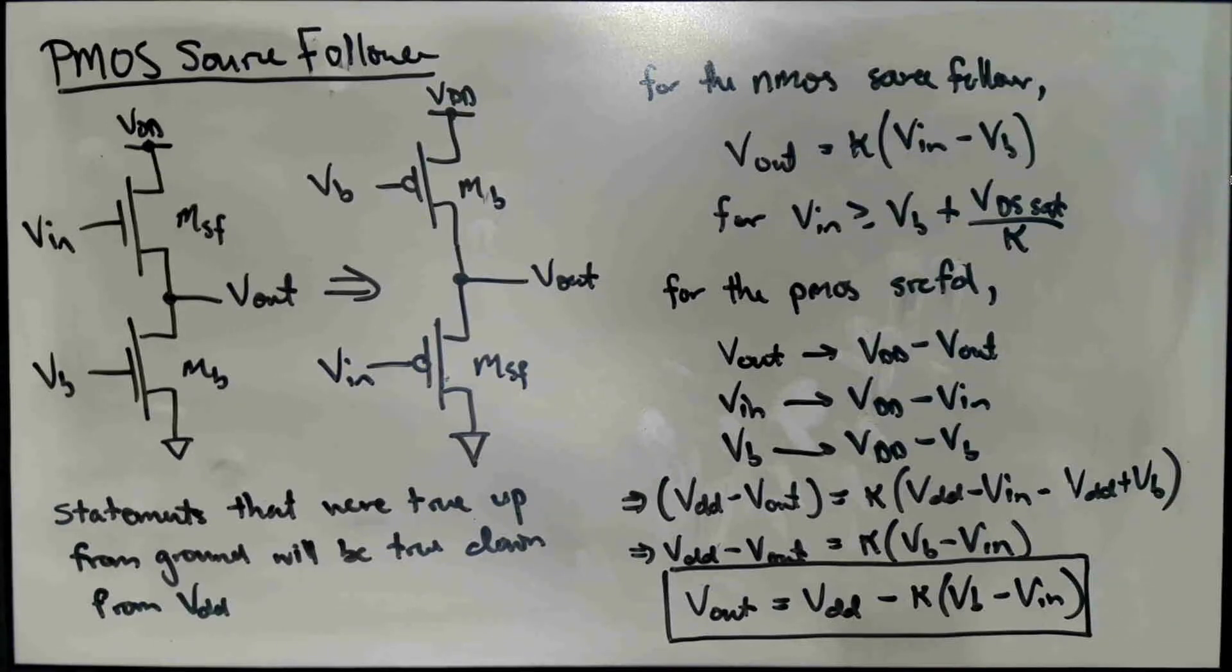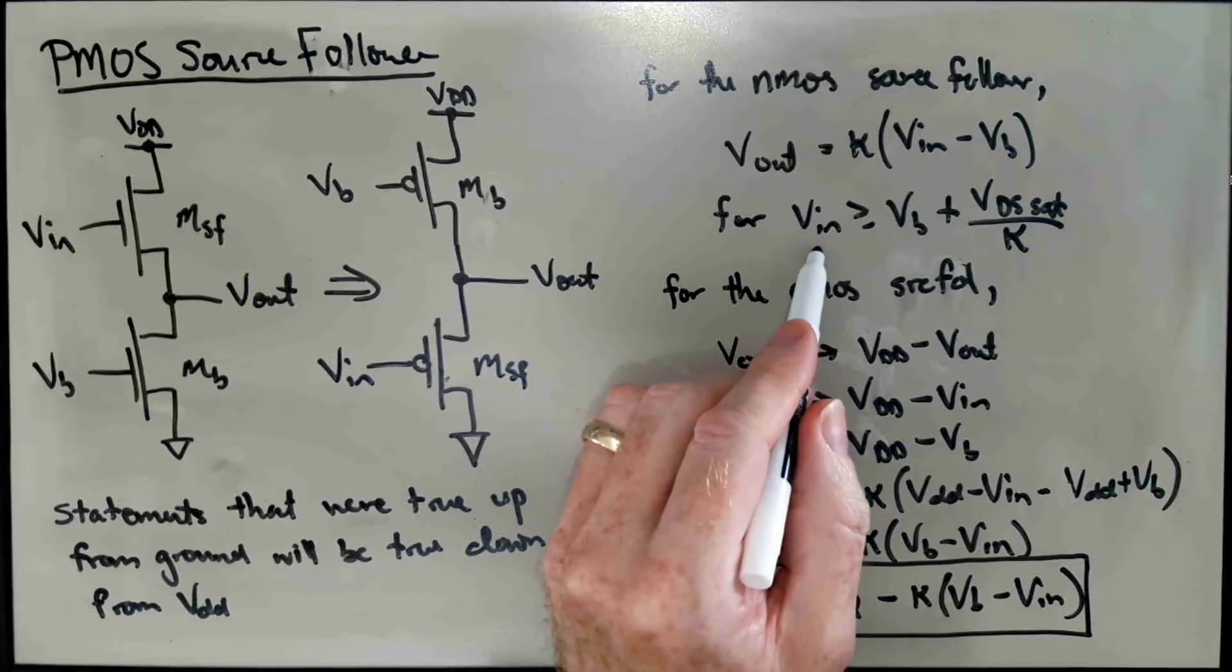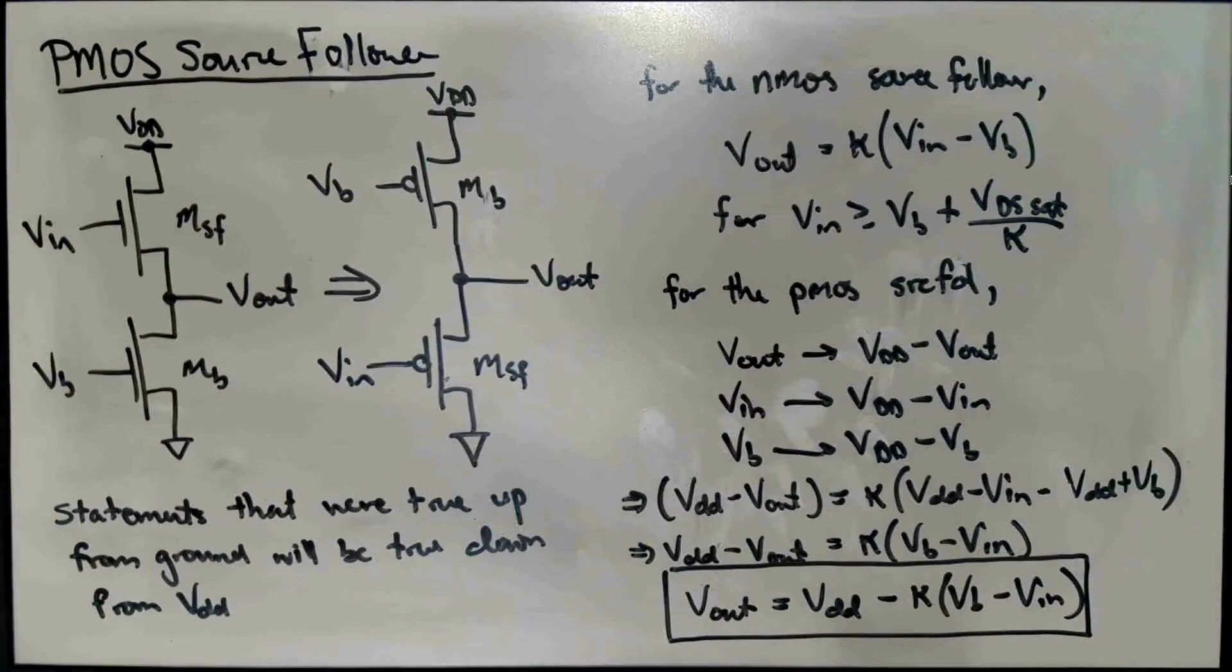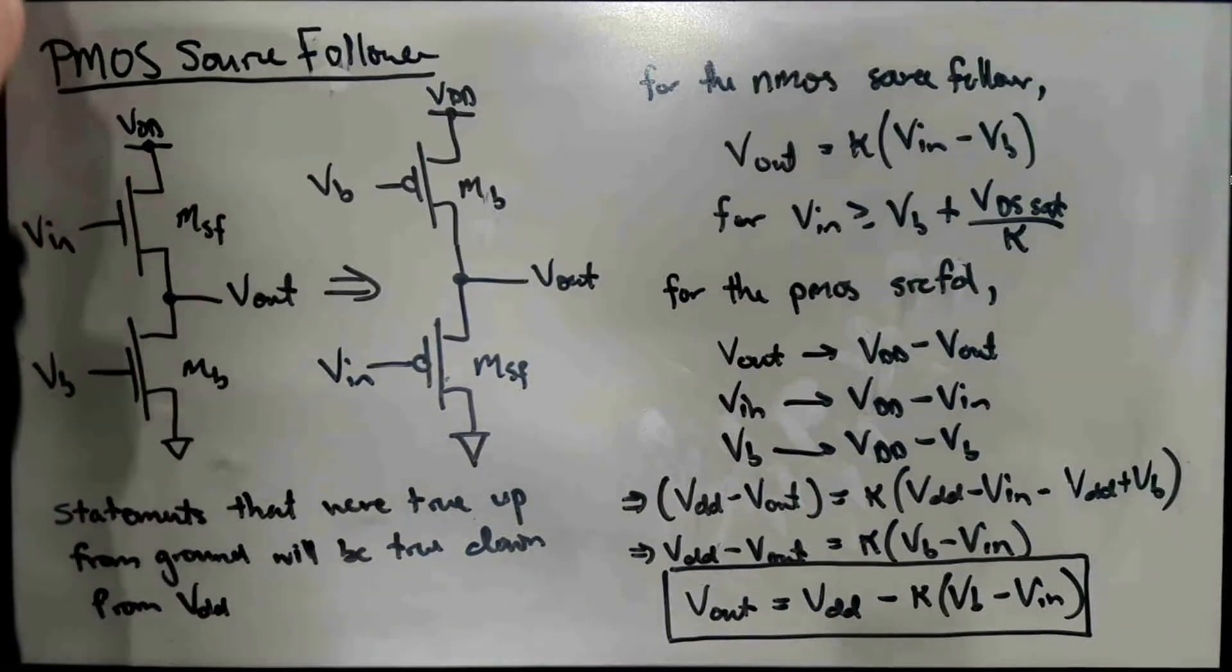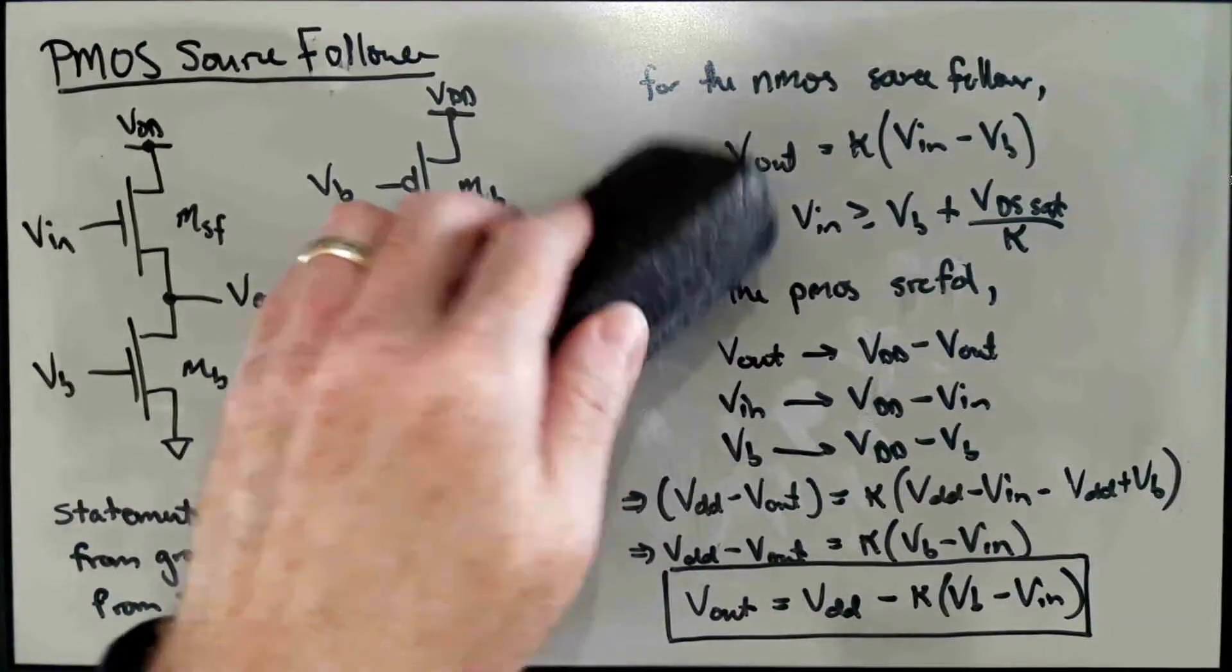So that would correspond to our first equation. That would be an equation for our voltage transfer characteristic. And now we'd like to find the inequality constraint that would correspond to the constraint we had on the input voltage to ensure that MB is saturated.